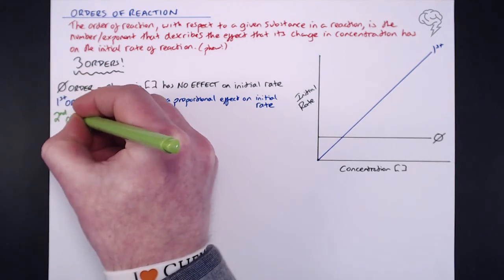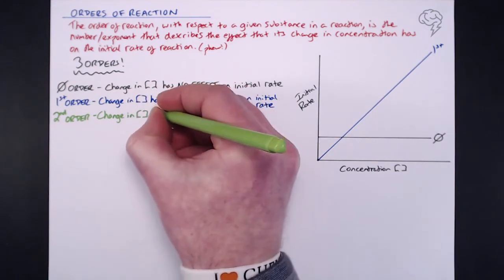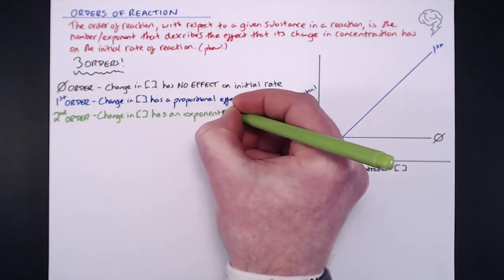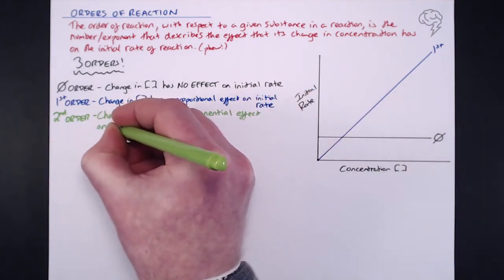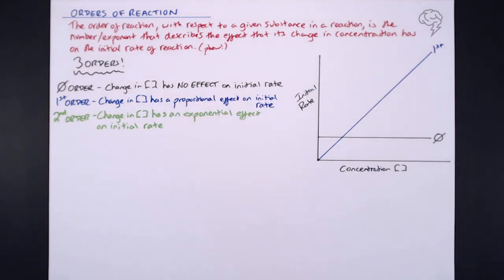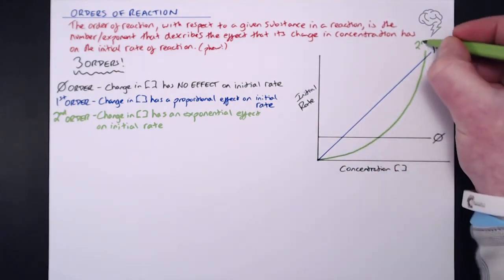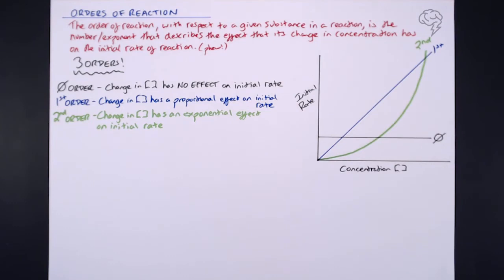Next up, of course, it's second order. Second order, when you change the concentration, has an exponential effect on initial rate — it goes up squared. So if you double the concentration of a reactant that is second order, the rate of reaction is going to go up by a factor of four — it's going to quadruple. If you triple the concentration, it's going to go up by a factor of nine. Looking at a graph, as you increase concentration, the initial rate goes up exponentially — you see this classic exponential curve.